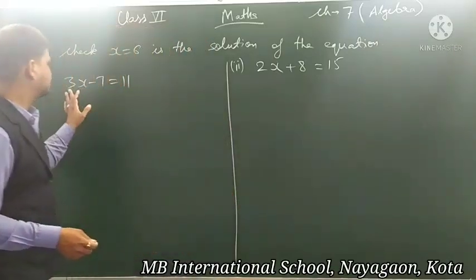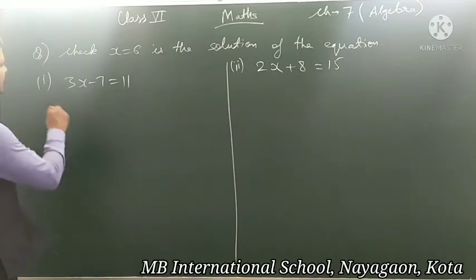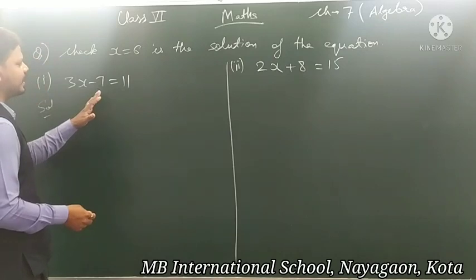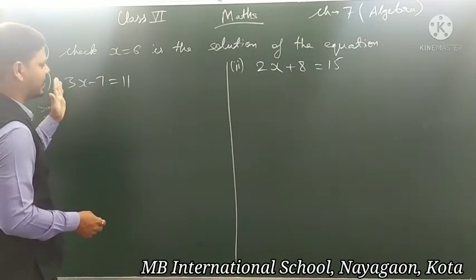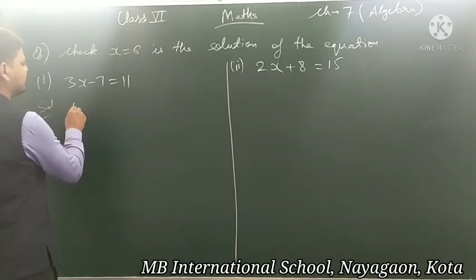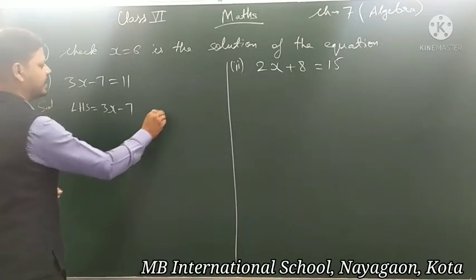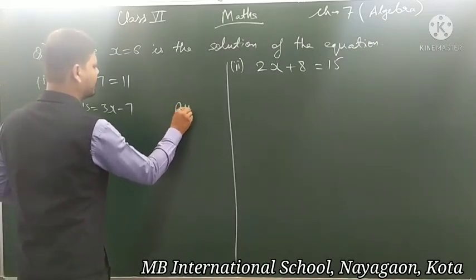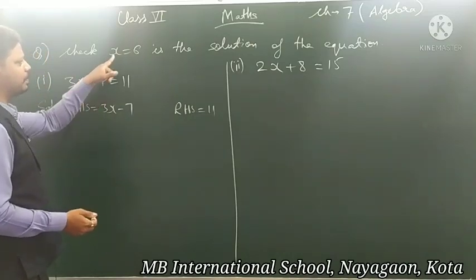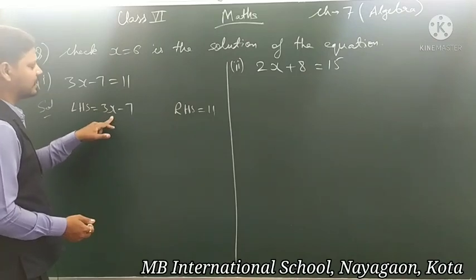Now, the given equation is 3x minus 7 equals 11. We divide it into LHS and RHS. The left-hand side part is 3x minus 7, and the right-hand side part is 11. The value of x given to us is 6. We have to check whether x equals to 6 is the solution of this equation or not.